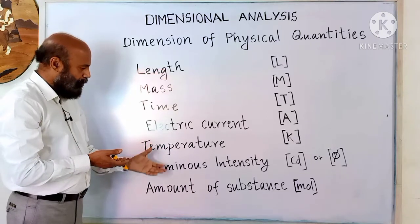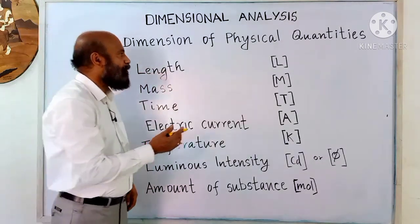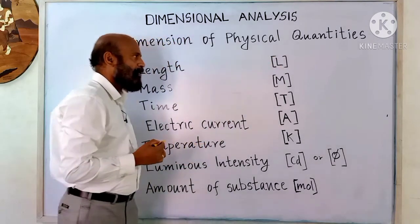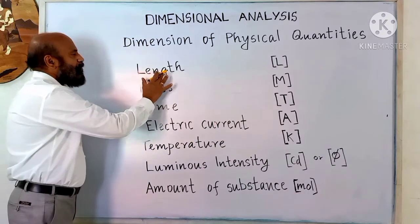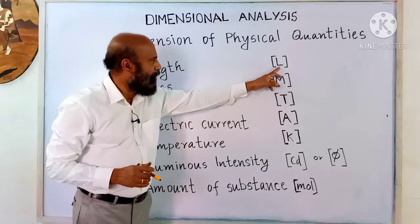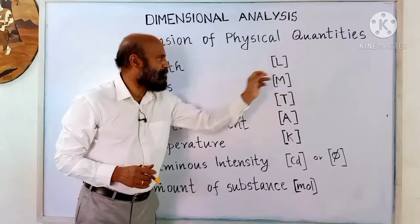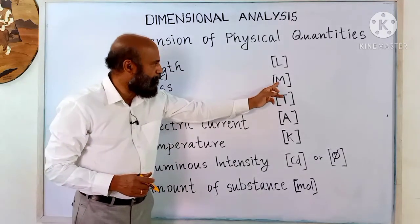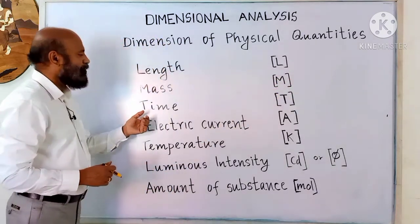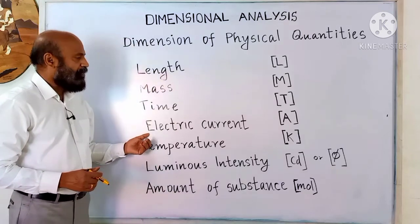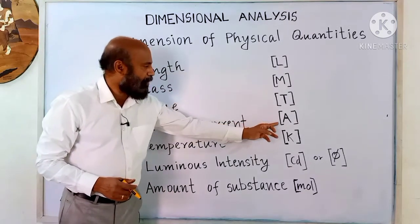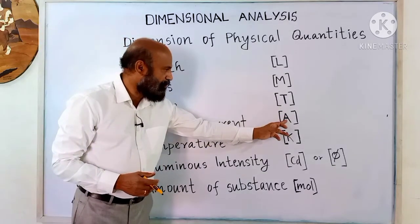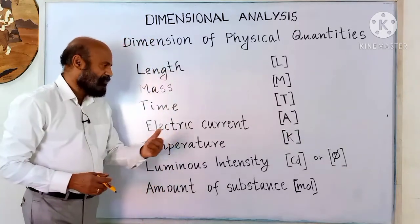There are seven fundamental quantities. The dimension of a physical quantity is denoted inside a square bracket. For example, dimension of length is capital L, dimension of mass is capital M, dimension of time is capital T, and dimension of electric current is capital A. Electric current is measured in ampere, that is why it is A.